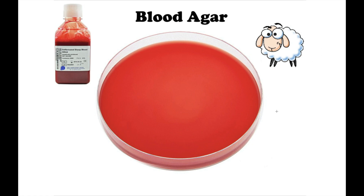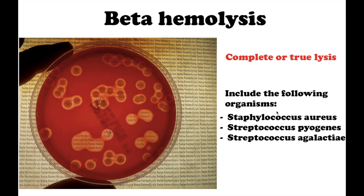Bacteria can produce different types of hemolysins. Beta hemolysis is defined as complete or true lysis of red blood cells. A clear zone approaching the color and transparency of the base medium surrounds the colony. This includes the following organisms: Staphylococcus aureus and Streptococcus pyogenes.